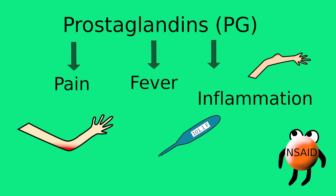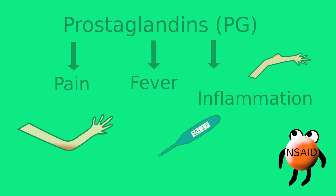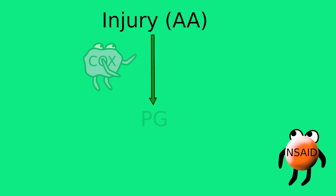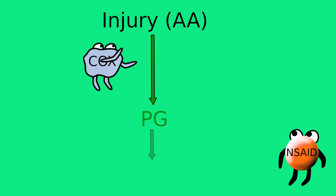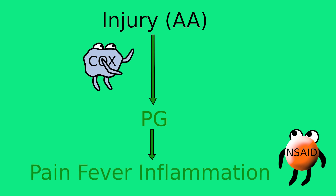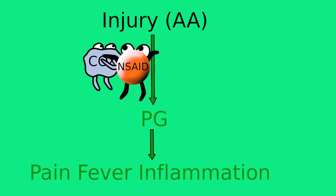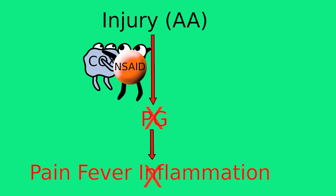Let's review since we've covered a lot of information. You get an injury, and the arachidonic acid hanging around the injury site is converted to a hormone-like substance called prostaglandin. This is done via a worker bee called the cyclooxygenase enzyme, or COX enzyme, and this all leads to pain, fever, and inflammation. Now, NSAIDs like Advil go in and block the COX enzyme from working. Thus, the passageway to pain, fever, and inflammation is blocked, which leads to relief from your symptoms.